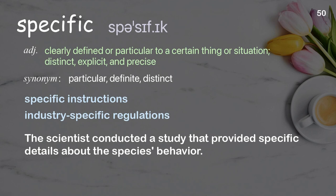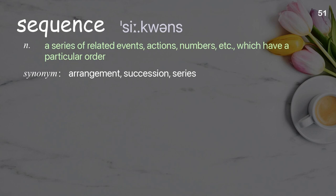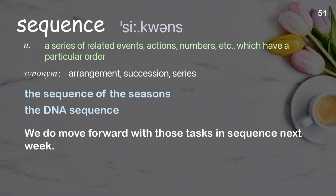Sequence: a series of related events, actions, numbers, etc., which have a particular order. Examples: the sequence of the seasons. We do move forward with those tasks in sequence next week.